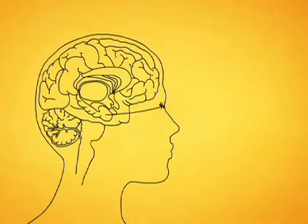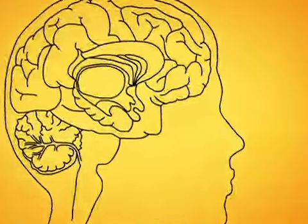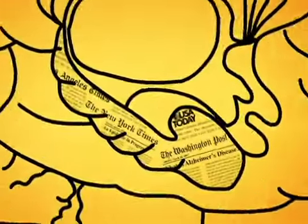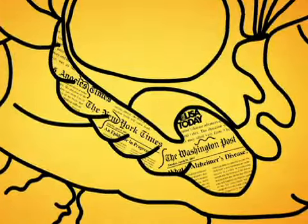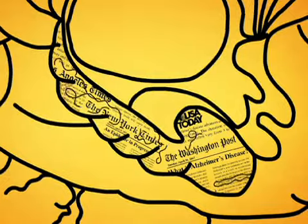They start here, in the hippocampus, the part of the brain where memories are first formed. Over many years' time, the plaques and tangles slowly destroy the hippocampus, and it becomes harder and harder to form new memories.